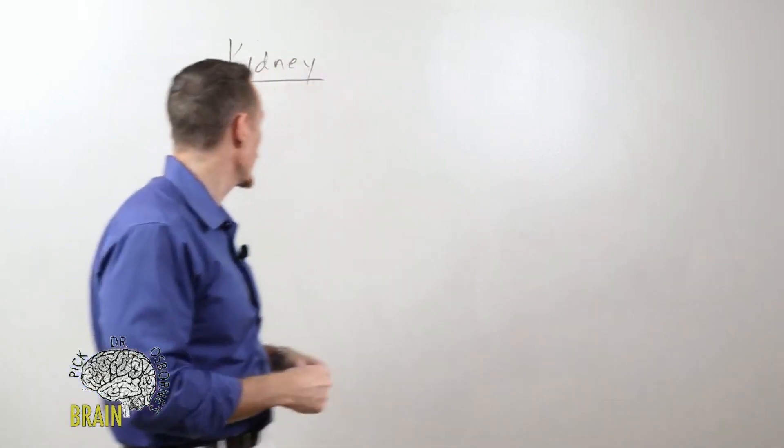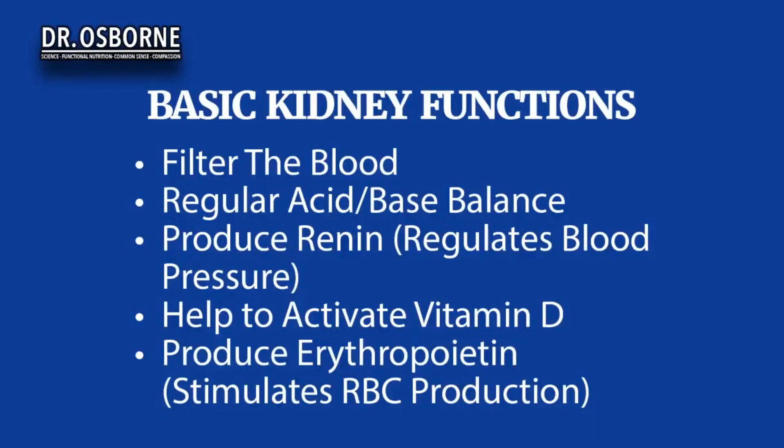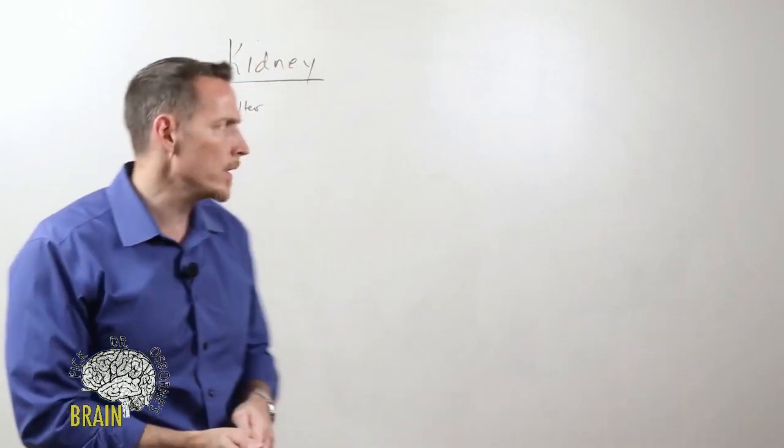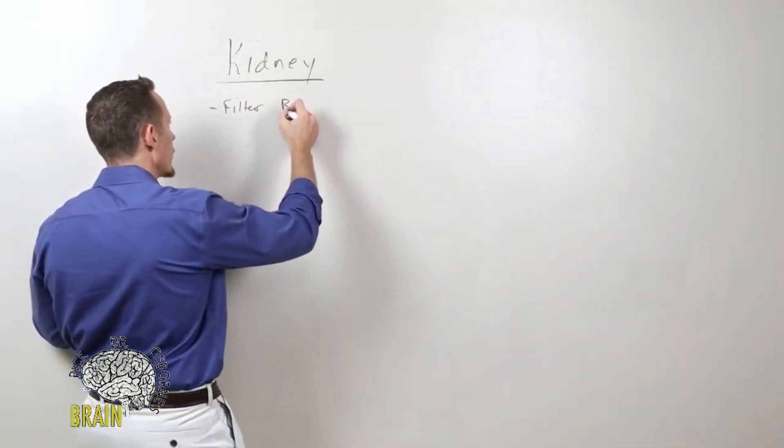Number one, kidneys filter your bloodstream. As your blood is constantly pumping through your kidneys, they act as massive filters that do a lot of filtration. The excess that comes out includes many chemicals and different types of agents that, if they stayed in your body, would potentially be harmful or damaging. So detoxification happens through that filtration system.